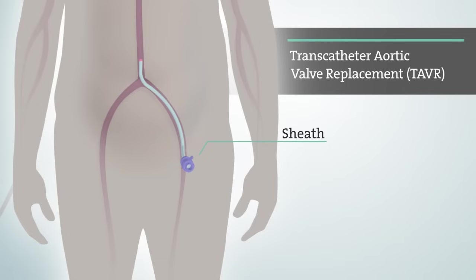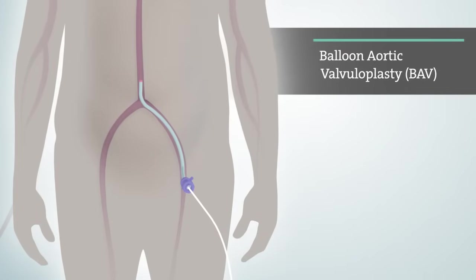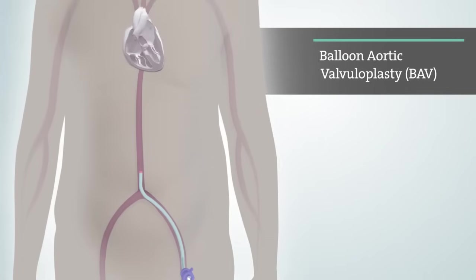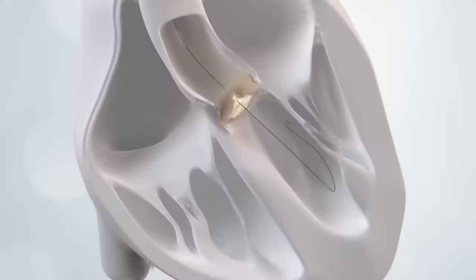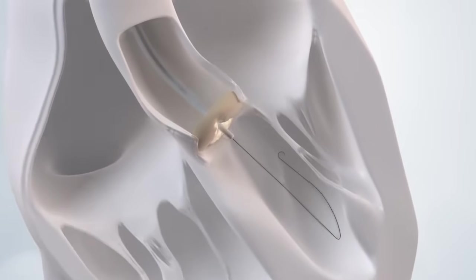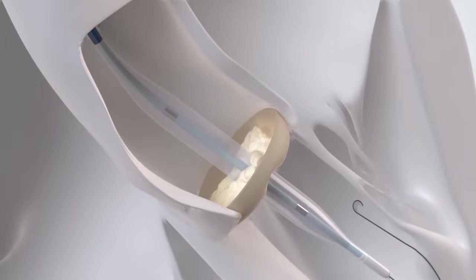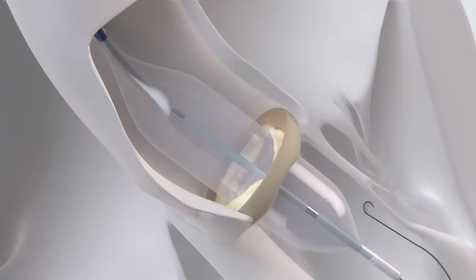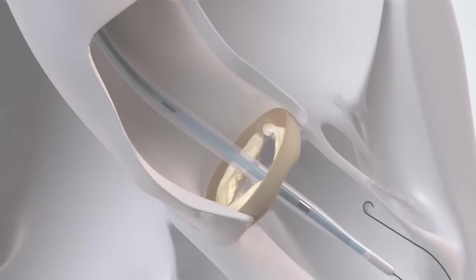Sometimes, as a first step during the TAVR procedure, balloon aortic valvuloplasty, also known as BAV, is performed in order to open your narrowed calcified valve. Once the sheath is in place, your doctor will guide a catheter with the balloon on the end of it up to your aortic valve. Once the balloon catheter reaches your aortic valve, the balloon is inflated to open your narrowed calcified valve. The balloon catheter is then deflated and pulled back from the aortic valve.